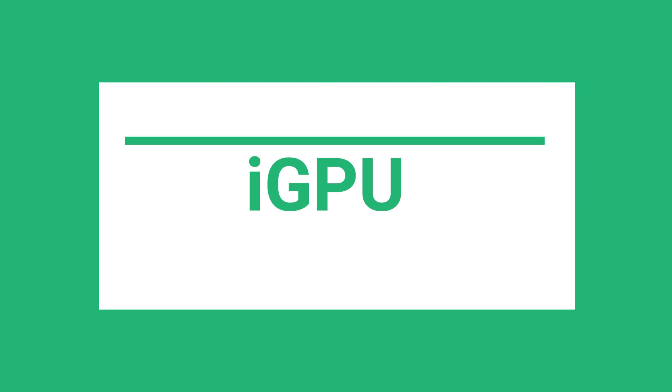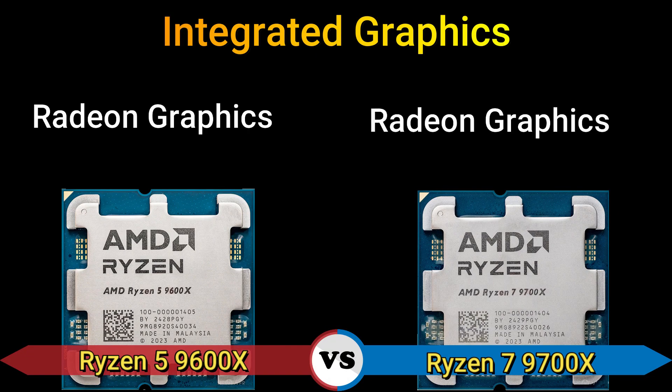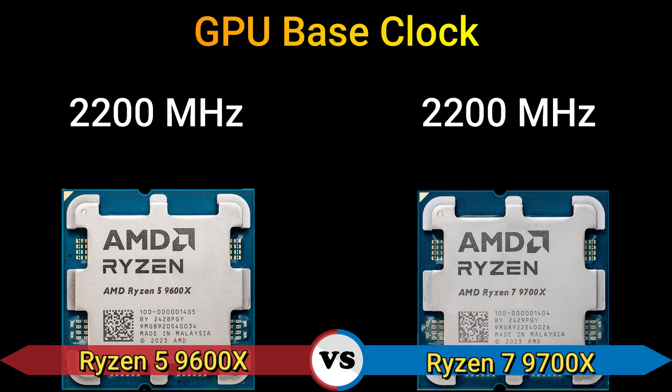Part 3: Integrated graphics — Radeon Graphics. GPU base clock: 2200 MHz.